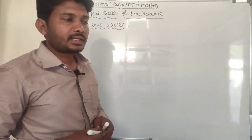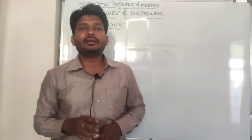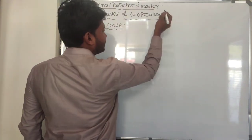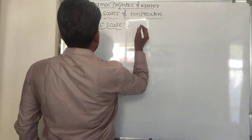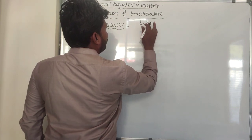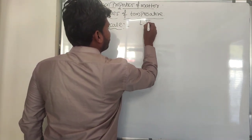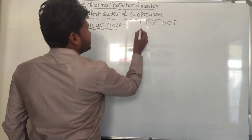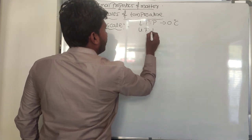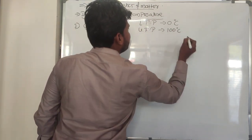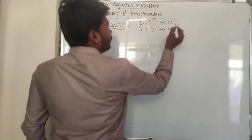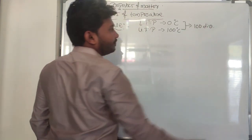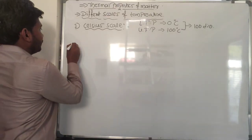For the Celsius scale, Fahrenheit scale, and Kelvin scale, we have two reference points: one is the lower fixed point and another is the upper fixed point — also called the ice point and the boiling point (or steam point). For the Celsius scale, the lower fixed point is 0°C and the upper fixed point is 100°C. From the upper to the lower fixed point there are 100 divisions.